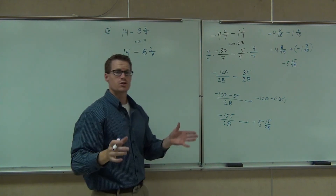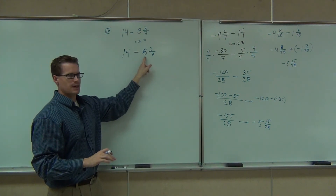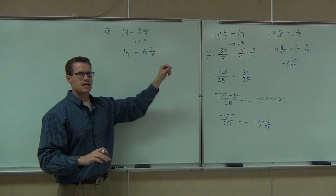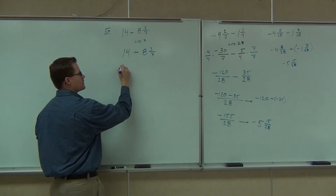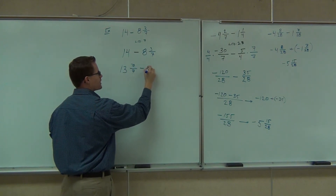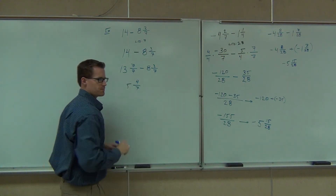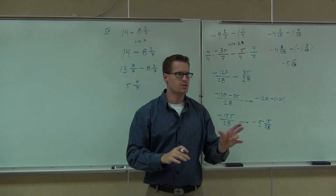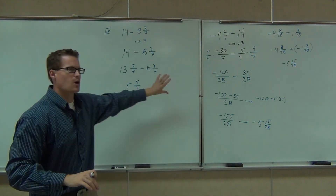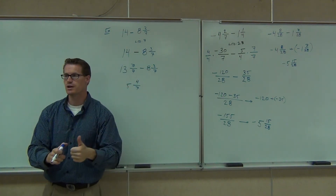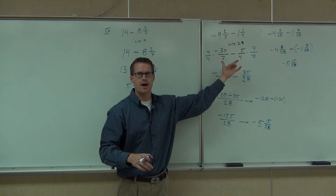This is what your book shows — it's fine. But the problem is you can't subtract 14 minus 8 directly because you have a fraction part — it's just 1 over 1. You'd have to borrow: change 14 to 13 and 7/7, then subtract 8 and 3/7 to get 5 and 4/7. You have to remember to borrow from those numbers. That's why I'm showing the improper fraction method — it works every single time.